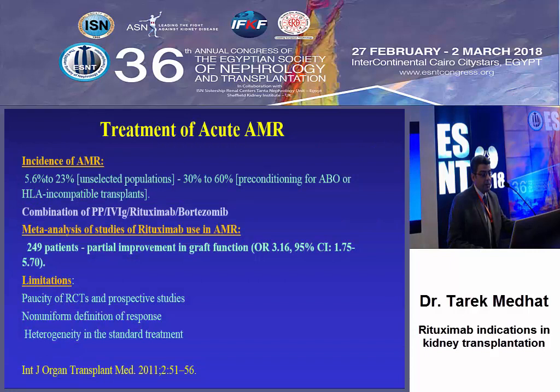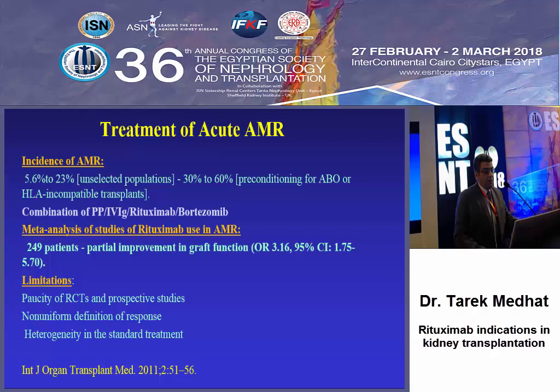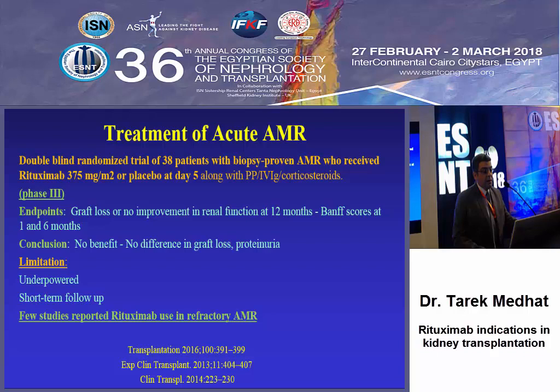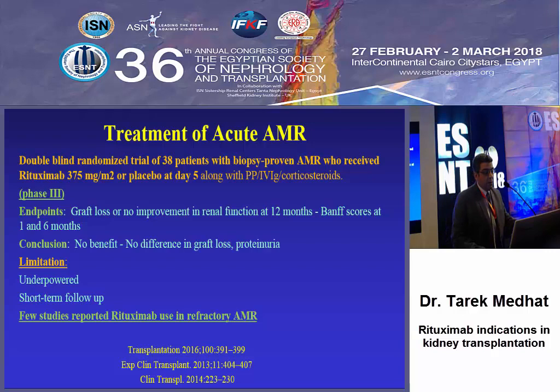Regarding the use in antibody-mediated rejection, the incidence of antibody-mediated rejection differs according to the selected population. The use of IVIG and plasmapheresis is the main treatment, and recent trials evaluated the use of bortezomib, eculizumab, and rituximab. A meta-analysis collecting 249 patients showed partial improvement in graft function. However, there are limitations including lack of prospective randomized controlled trials and non-uniform definition of response. A double-blind randomized trial of 38 patients all having biopsy-proven antibody-mediated rejection found no benefit from rituximab use and no difference in graft loss. However, it was underpowered.